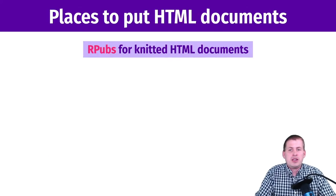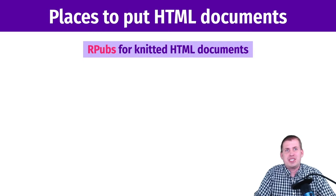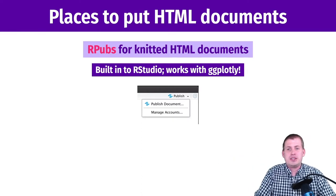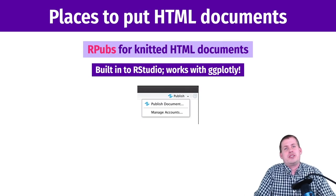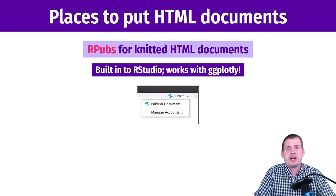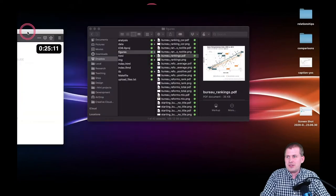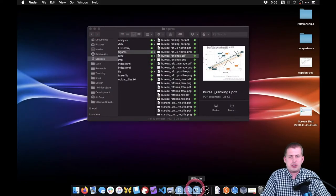There are a few different ways to do this. The easiest way is actually built into RStudio and you may have missed it — it's kind of hard to see. When you knit to HTML, there's a button in the top corner of the HTML preview that says 'Publish.' If you click that dropdown, it lets you publish the knitted version of your document to the internet to a website called RPubs. I'm going to do a quick example so you can see what it looks like.